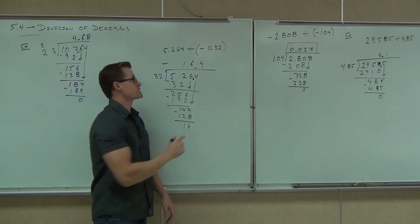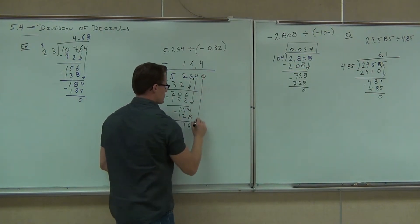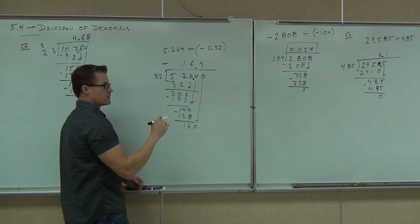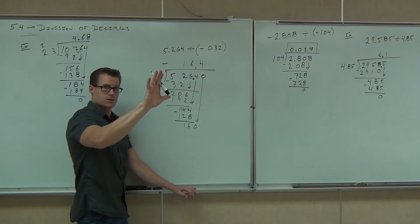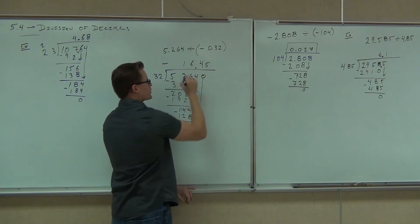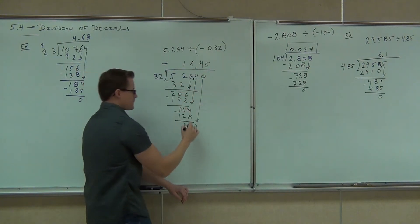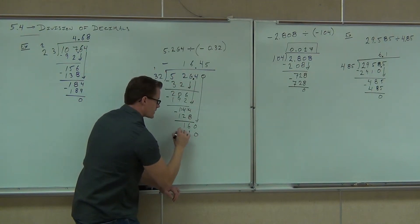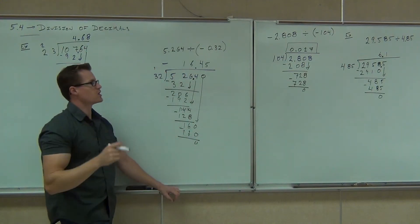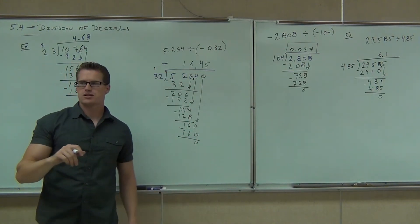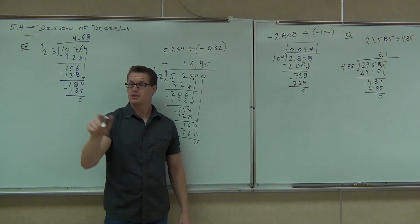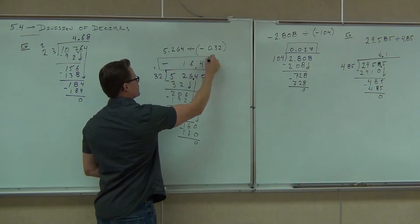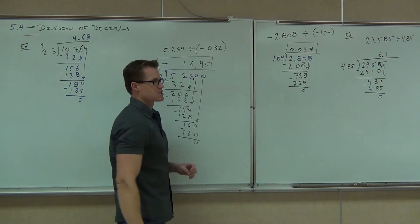I had a 0 — I can still do that. And 32 times 5 is going to be 160. So put that 5 up there. We're going to get our 10, we'll get our 16 out of that. When I subtract, I get 0. So sure enough, our answer is negative 16.45.